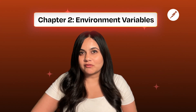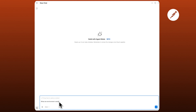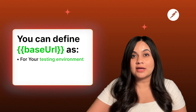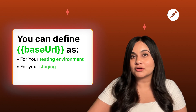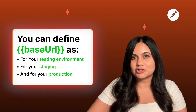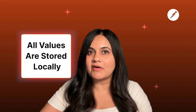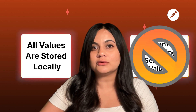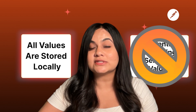Environment variables let you change your value depending on which environment you're working with. For example, if you have a base URL, you can create an environment for testing, staging, or production. This lets you switch environments with a single click without having to edit any requests. Also, all values are stored locally, so there's no risk of accidentally pasting sensitive values and having them synced to the cloud.